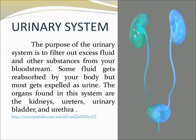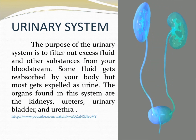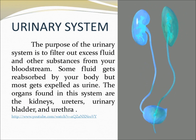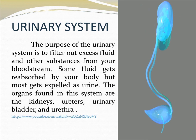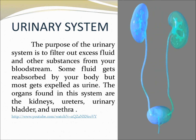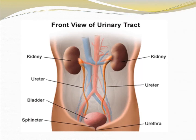The urinary system functions to filter out excess fluid and other substances from our bloodstream. Some fluid gets reabsorbed by our body but most gets expelled as urine. Here the parts of the urinary system are shown: kidney, ureter, bladder, sphincter, and urethra.